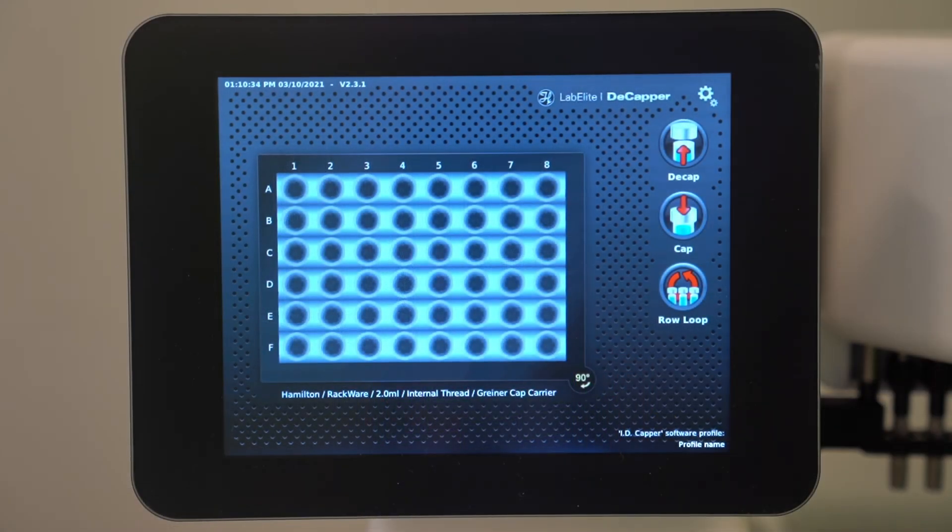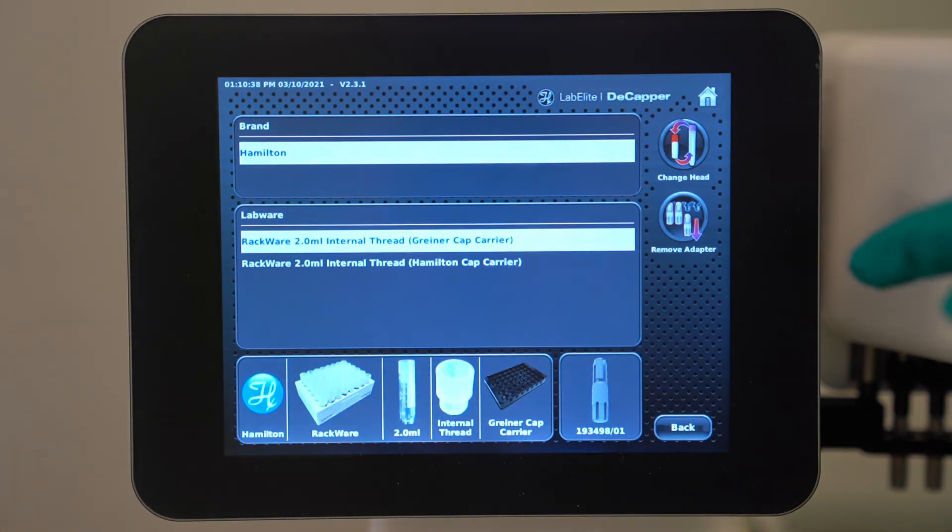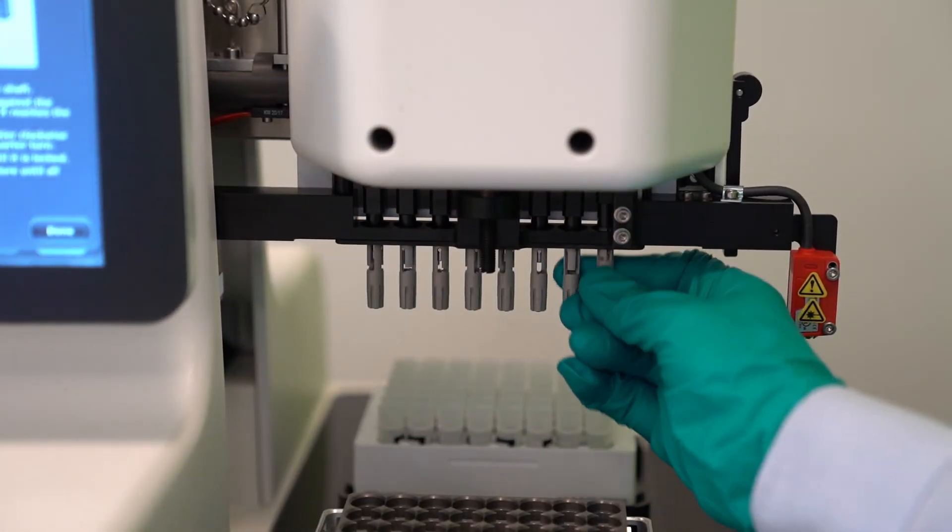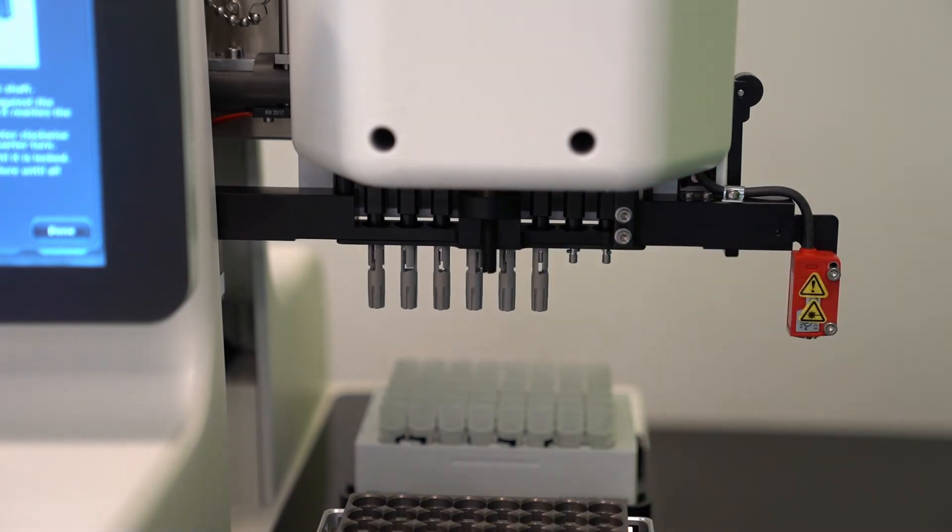To change the adapter sets, select system settings on the touch screen, at which point the system will walk you through the process. To change out the bit, simply press up, rotate a quarter turn, then pull down. To install new bits, simply reverse these steps.